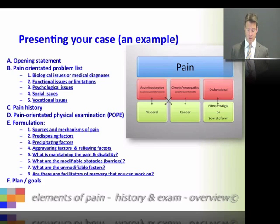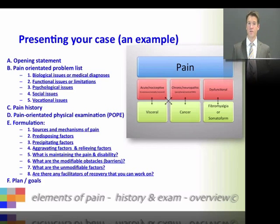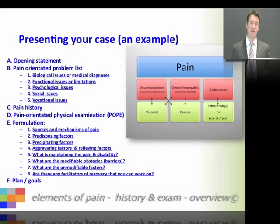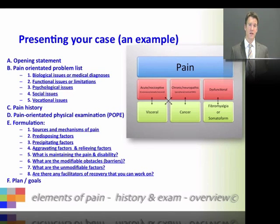What are the aggravating factors and the relieving factors? You might choose to elaborate — aggravated by lack of sleep, aggravated by various levels of anxiety or social and family pressures. This shows that you understand the psychology and social aspects of her pain. You might want to mention the modifiable obstacles and barriers — those flags we've mentioned — one or two of those catastrophizing self-efficacy issues, and elaborate on that. And what are the things you can't modify, as we've mentioned. Are there any facilitators, anything we can work with to reduce the pain?